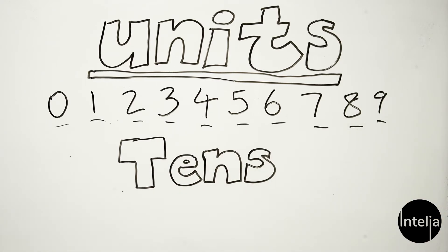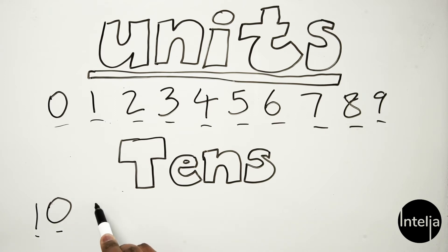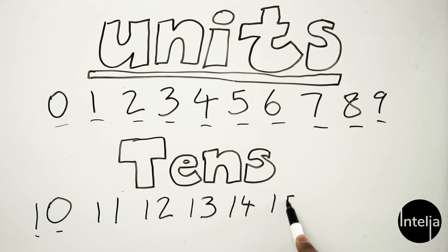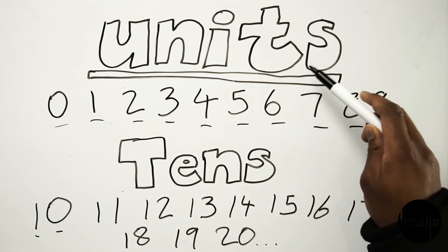And then tens are what come after. Like ten — ten doesn't stand by itself; there's a one and a zero, so it's a ten. Then you have eleven, twelve, thirteen, fourteen, fifteen, sixteen, seventeen, eighteen, nineteen, and twenty, and all the other numbers that come after twenty. So units are numbers that stand by themselves, and tens are numbers that are always in twos.